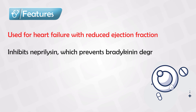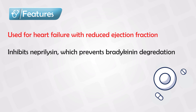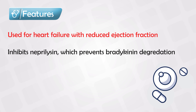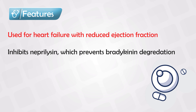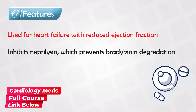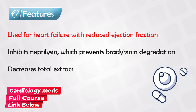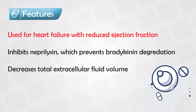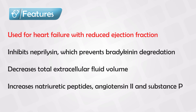It works by inhibiting neprilysin, and this in turn prevents the degradation of bradykinin. Bradykinin is a natural vasodilator, so when it increases it causes systemic vasodilation and a decrease in the load of the heart. We will see a decrease in the total extracellular fluid volume. The medication will also cause increasing levels of the natriuretic peptides, angiotensin II, and substance P. They all have the same common effect of causing vasodilation and decreasing the heart load.